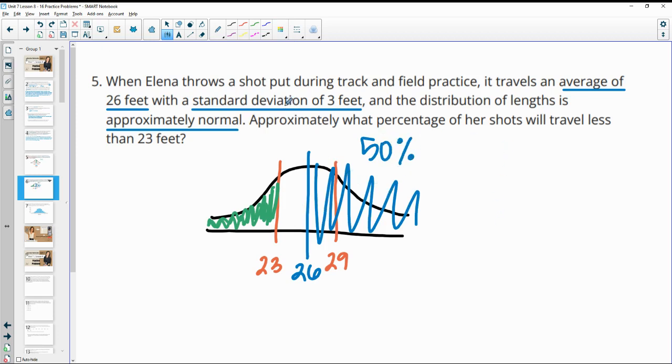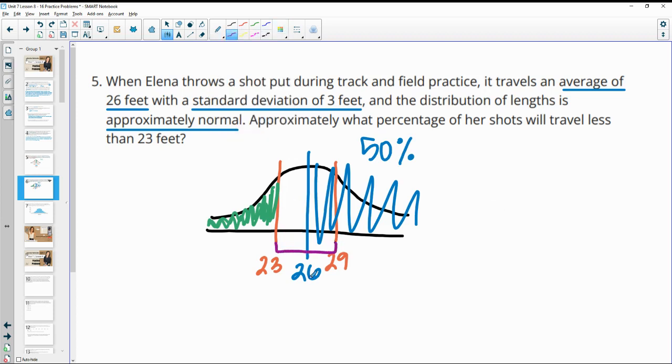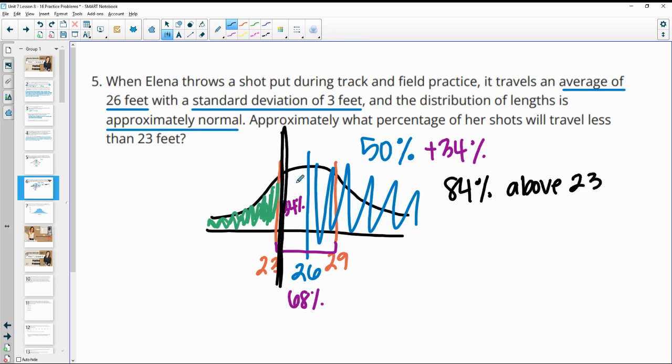I know that this chunk over here encompasses 50% of the data. So I know that above 26 is 50%. And then within one standard deviation from here to here is 68%, and half of that means 34% is over here. So then if I add 34% here, then I'm at 84% is above 23. So 84% is above here because we've got 34% in this first chunk and then 50% higher than the mean for a total of 84%. So then below 23 would be 100% minus 84%, so we would be at 16% below 23 feet.